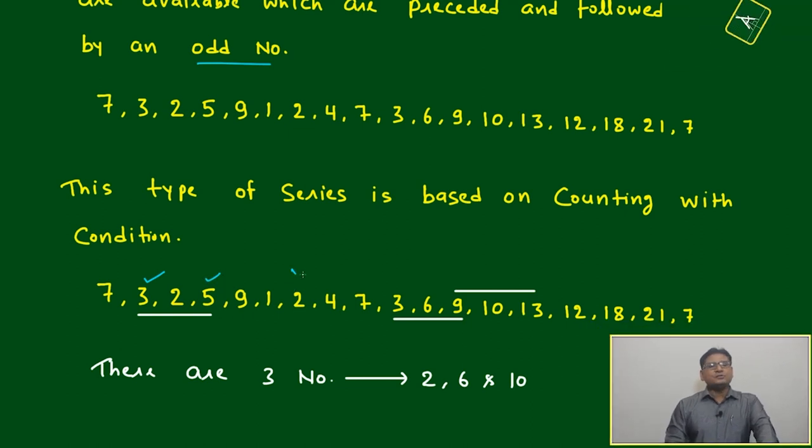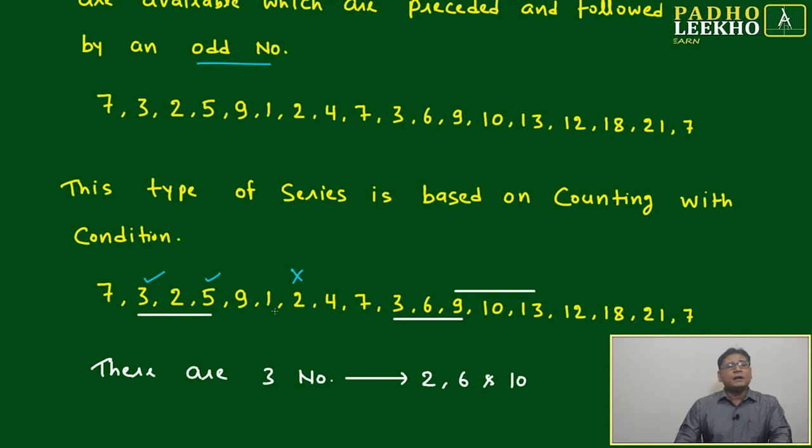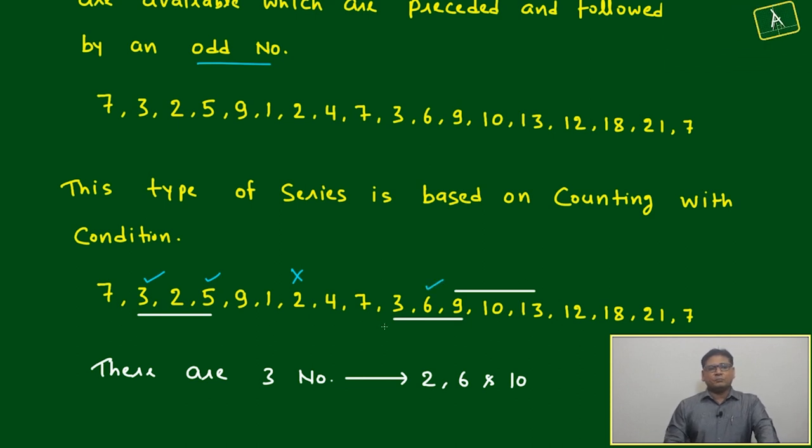These two are not possible because one is preceded by one, which is well and good, but followed by four, which is even. Again, three, six, nine - this is also perfectly fine because it is preceded by three and followed by nine. Again, ten - this is also perfectly fine.